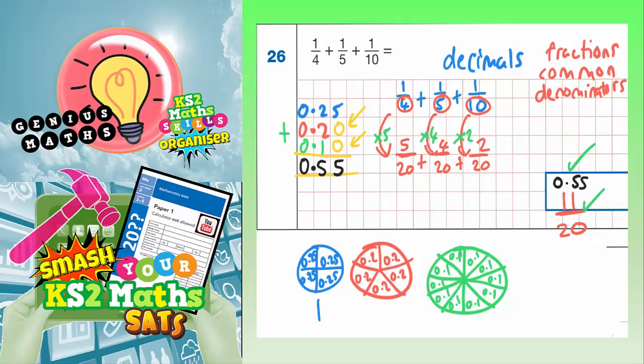Just to prove to you that these two are actually equivalent, they do actually equal one another, let's look at what happens if we turn 11 20ths into a decimal. Well, 11 20ths, if you turn that into a fraction out of 100, you'd be timesing the 20 by 5, so you'd have to also times the 11 by 5. 11 times 5 is 55.